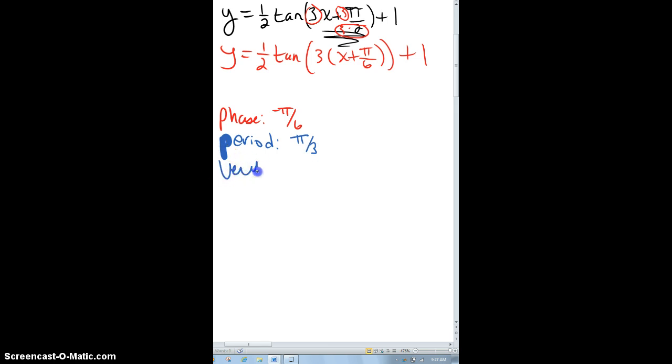My vertical shift is that out there, exactly what it says, and then now this guy, there is no amplitude with a tangent. It doesn't make sense, but what does make sense is this is going to either pull it or push it, so it is going to change the shape of the graph, but it's not amplitude, but it is going to matter.